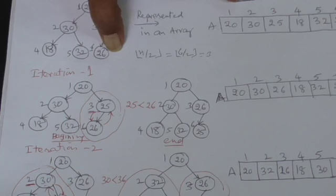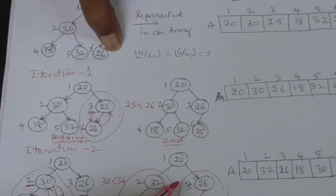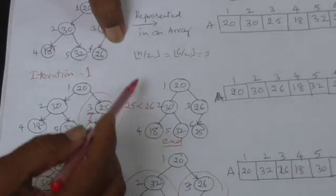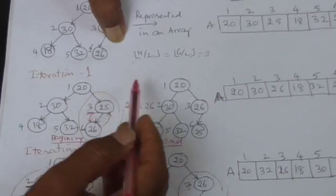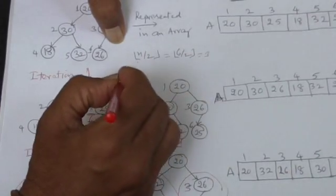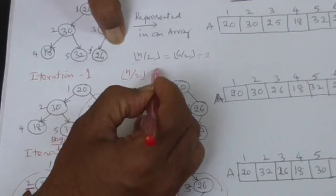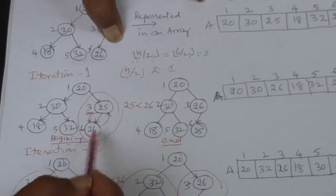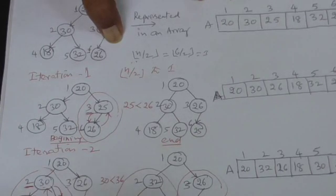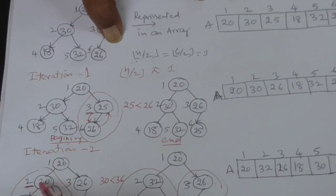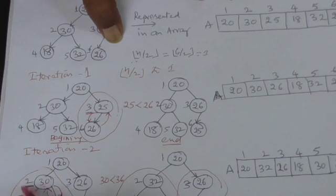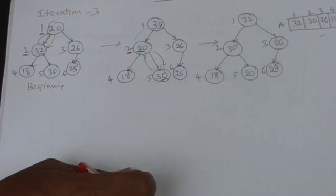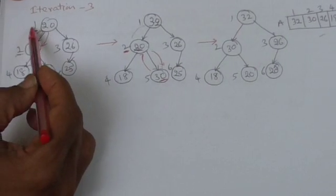Now the only element under consideration is going to be this one. The heapification process has to start from n by 2, the lower bound of n by 2. It has to go from n by 2 to the subscript 1. So first we have arranged this at 3. Then you have considered the subtree at this position 2, the root is at 2. Next we consider the tree at subscript 1.